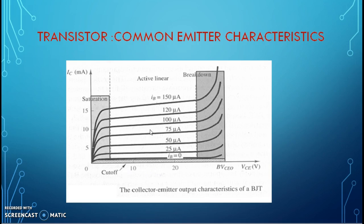When base current is changing, accordingly collector current changes. This region is called as active region. When the maximum current flows with less voltage, this region is called as saturation region.